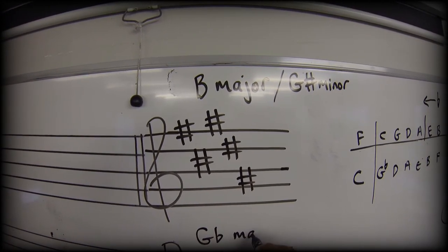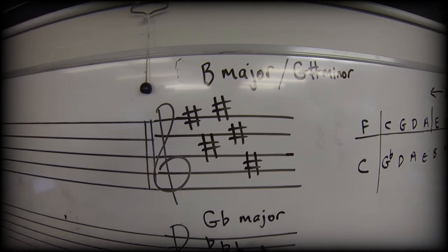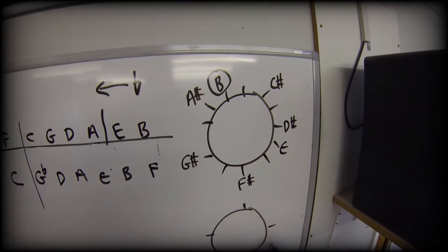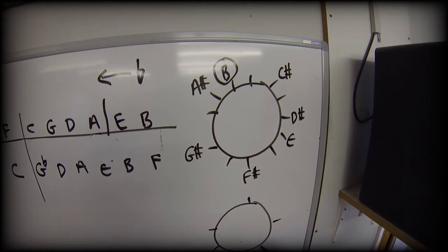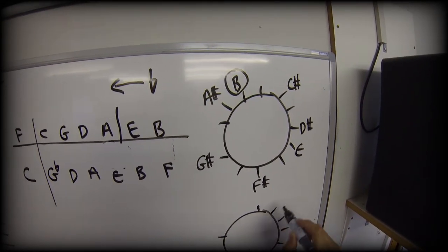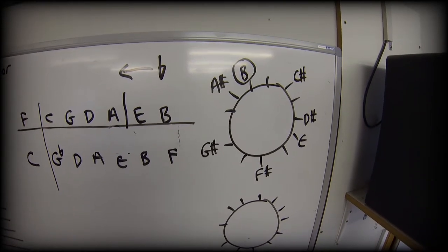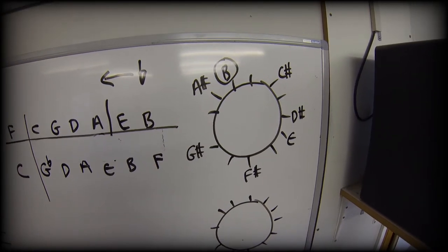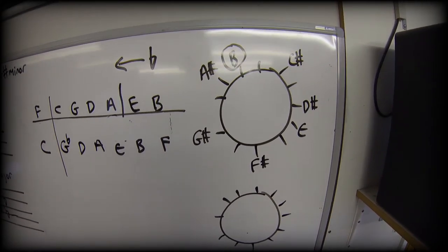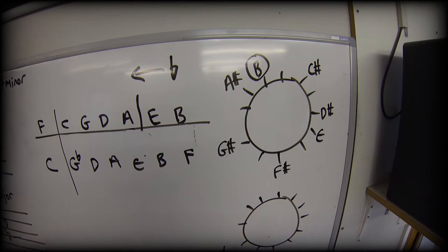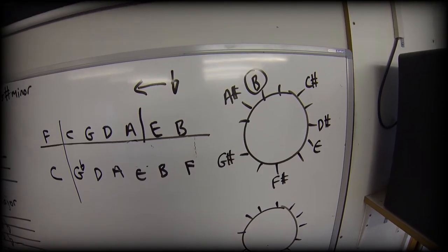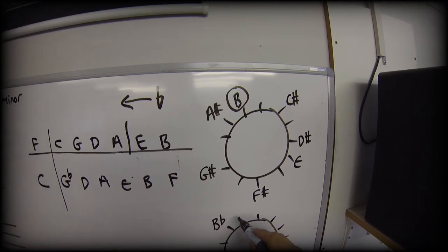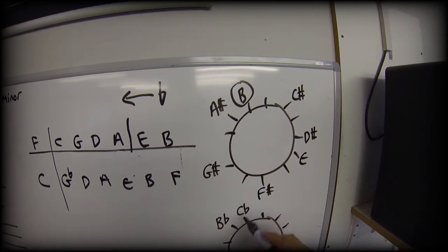So G flat major is the major scale that uses that. Now let's write that up on the clock. Now right on six o'clock on our clock is our F sharp, or in this case we're using the note name G flat.